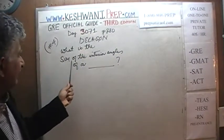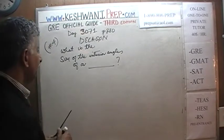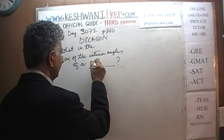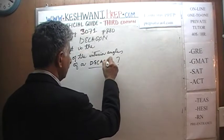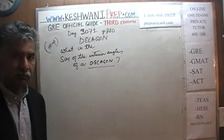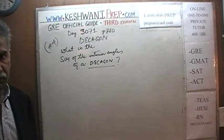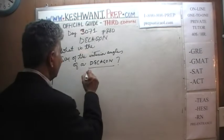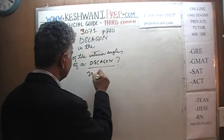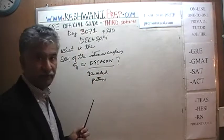The problem says: what is the sum of the interior angles of what is known as a decagon? What in the world is a decagon? Well, decagon is exactly what it says — "deca" meaning ten. A decagon means a ten-sided figure. Let's draw a ten-sided figure, shall we?